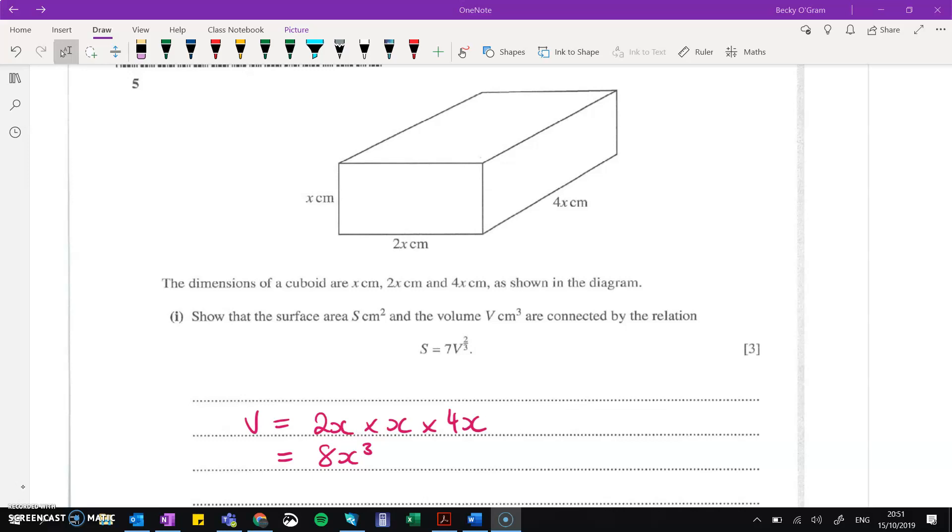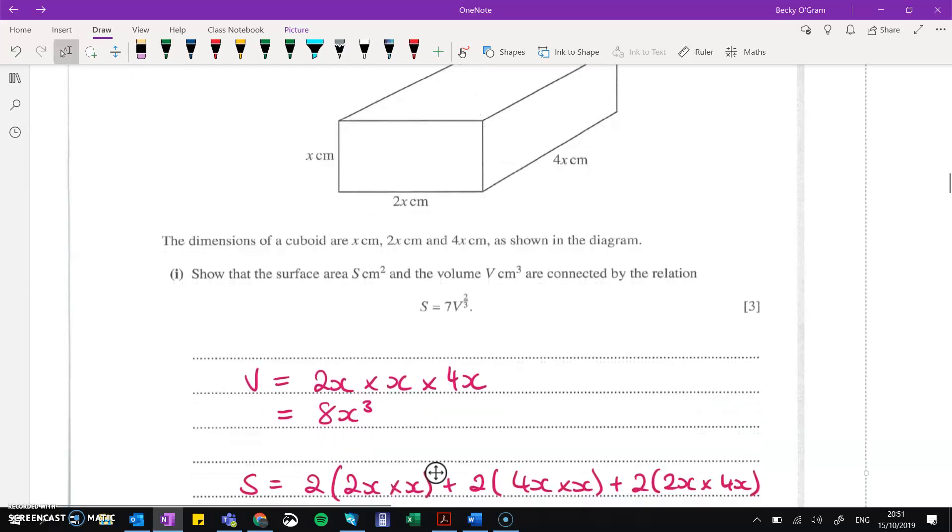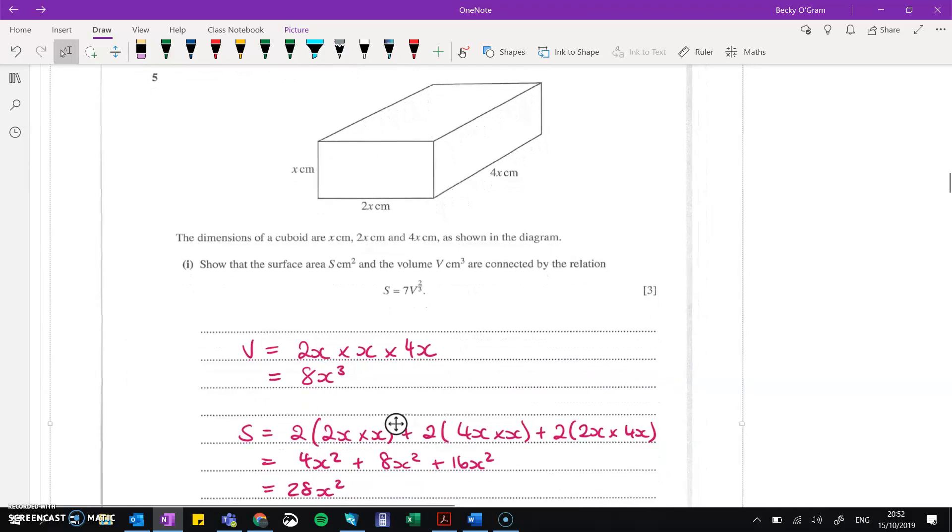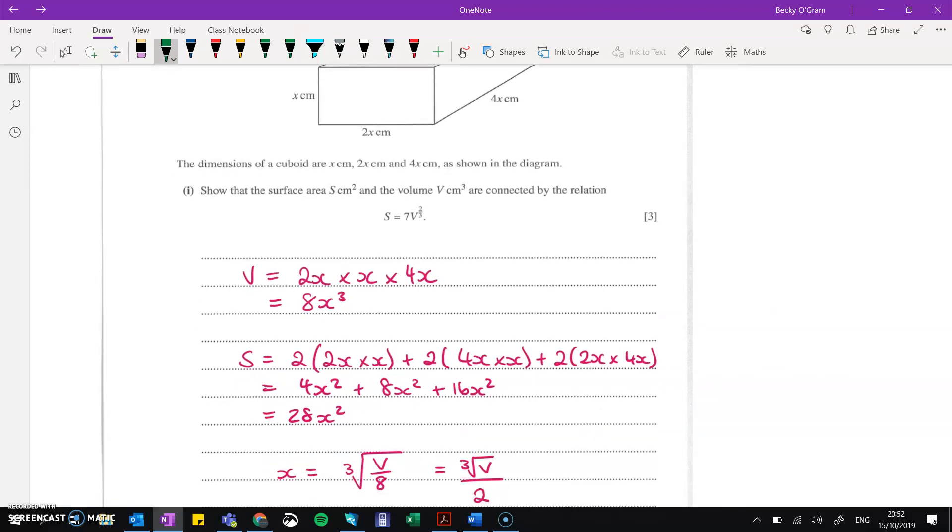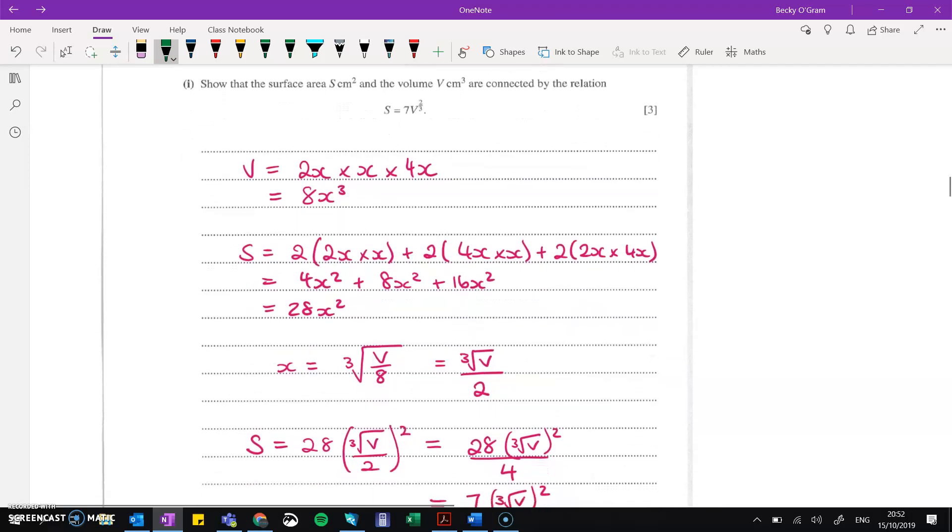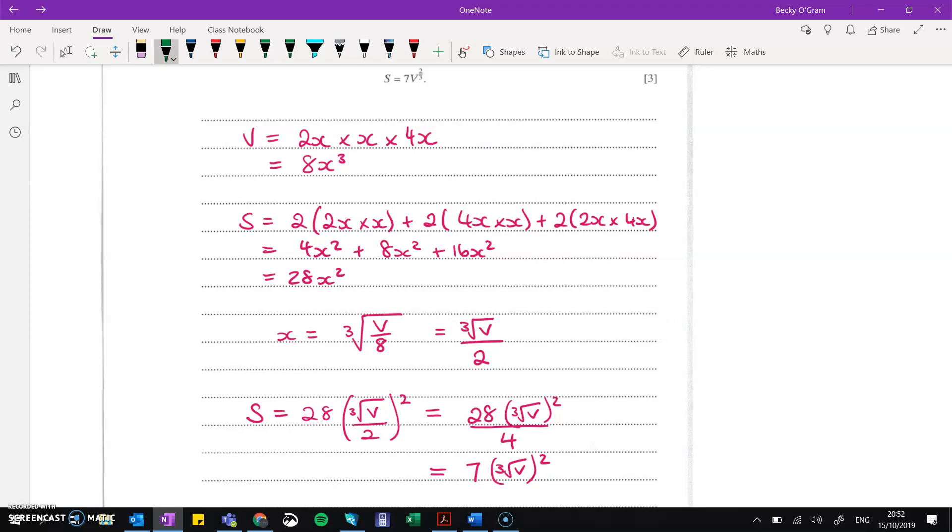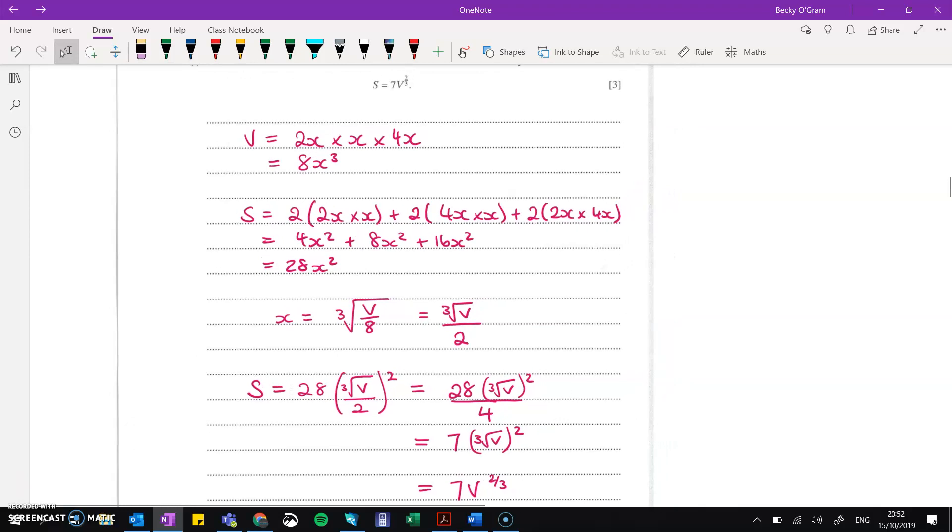Now, question 5 was conceptually difficult to think about. I thought this was actually quite a hard question for what it was actually asking you to do. So we want to link s and v in this particular format. So I first of all just started off by writing out what v and s would be from the diagram that was given to us. So v is 8x³ and s is 28x². So we've got the problem where we need to link s and v together and it's not quite so obvious straight away what to do. But if we can rearrange x so that x is the subject from the first bit, then we can put that x into the formula for the surface area. And you will come out with what we were asked for in the question: 7v^(2/3).